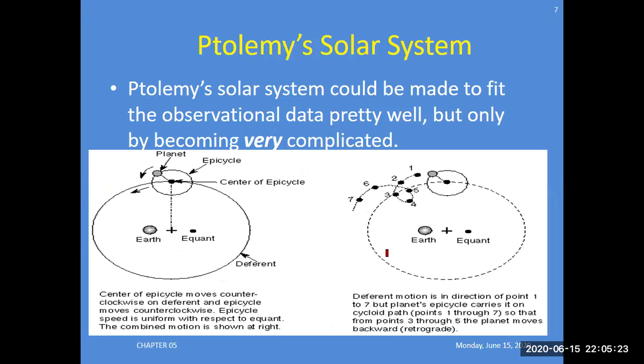Moving ahead, Ptolemy's solar system could be made to fit the observations data pretty well, but only by becoming very complicated. This was another concept with epicycles, planet centers of the cycle. These were different theories at that time which were used to understand the sky, galaxies, and the universe.